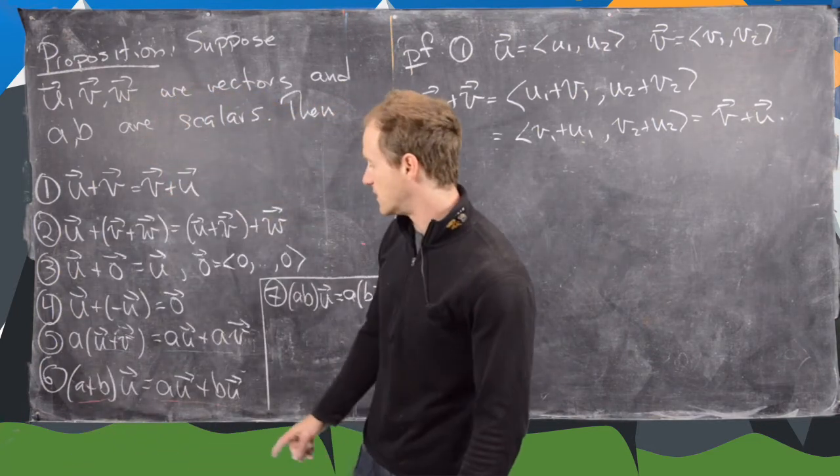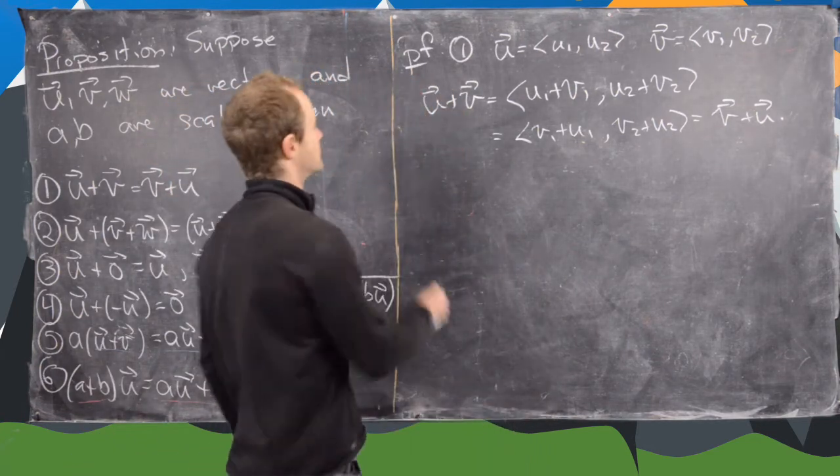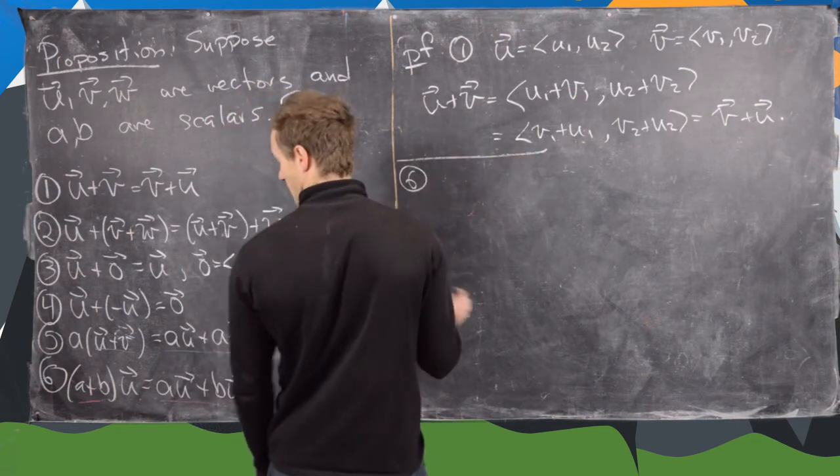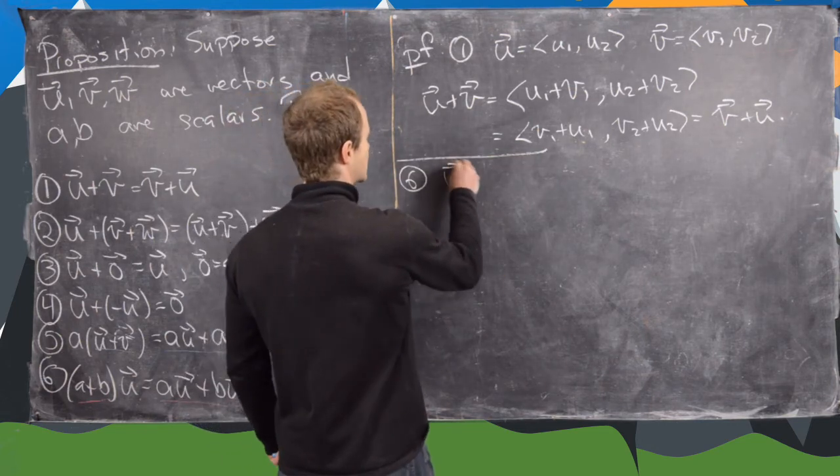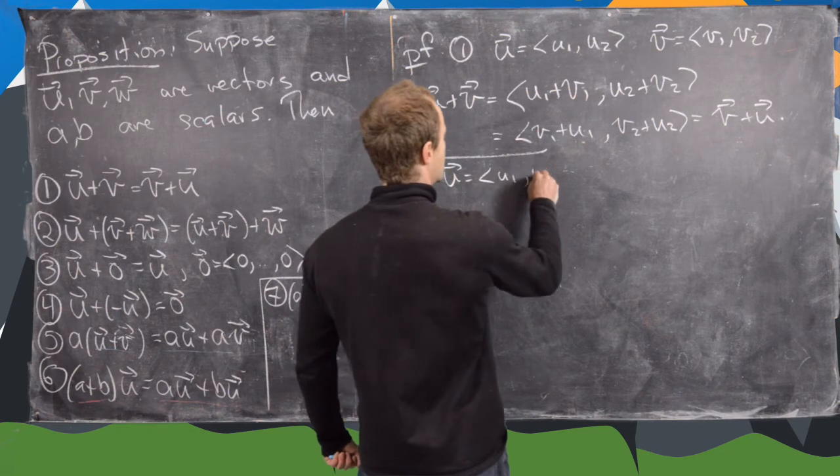So that's all there is to it. Let's maybe do six. So let's say, again, we'll set u equal to (u1, u2).